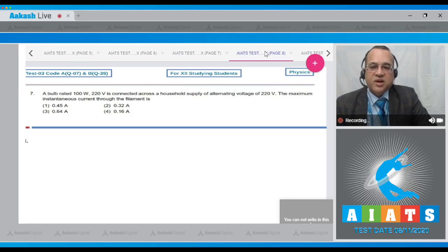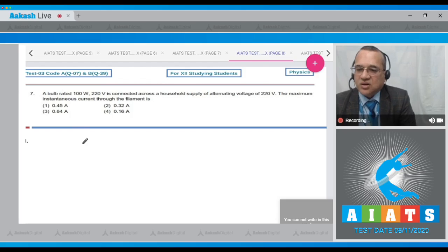Let us go to question number seven. The question says that a bulb rated 100 watt 220 volt is connected across a household supply of alternating voltage of 220 volt. The maximum instantaneous current through the filament is - these are the four options. And see, this bulb has the power V squared by R.